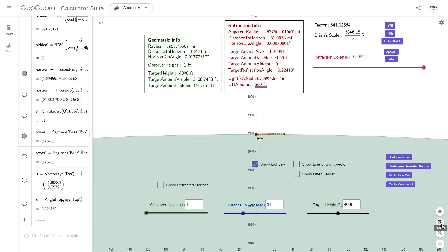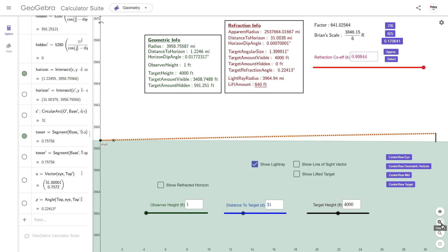Before that though, let's take a quick look at this example and discuss what is happening in terms of refraction. This circle represents the Earth with a 3959 mile radius. This will not change throughout this presentation. This is our target, 4,000 foot tall, 31 miles from our observer. The observer is one foot above the surface.